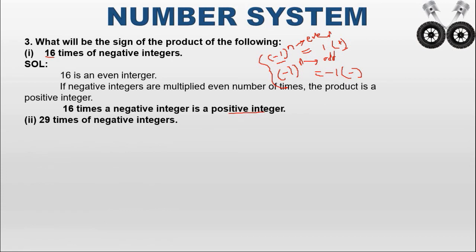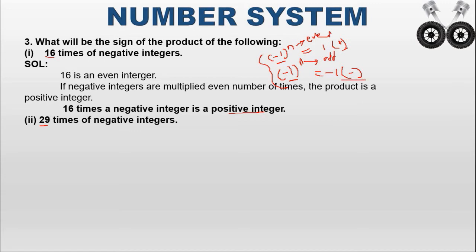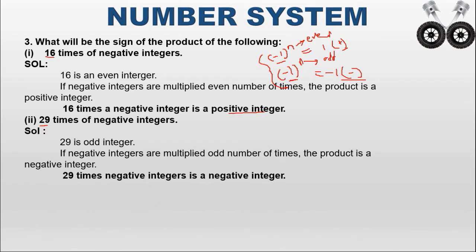For the second part: 29 times of negative integers. Minus 1 is the negative integer multiplied by 29. Since 29 is an odd number, the product is negative. If negative numbers are multiplied an odd number of times, the result is negative.